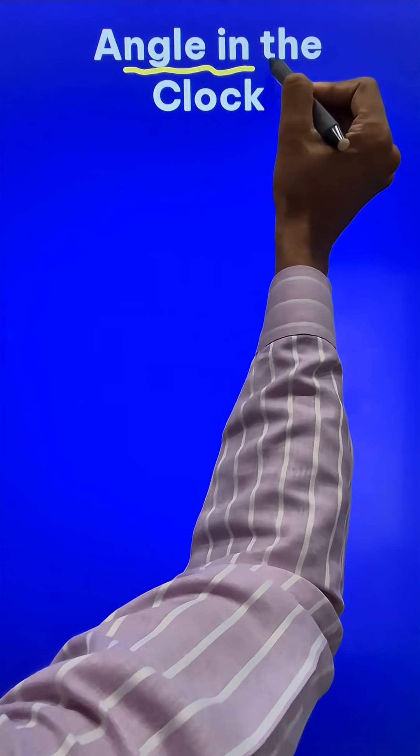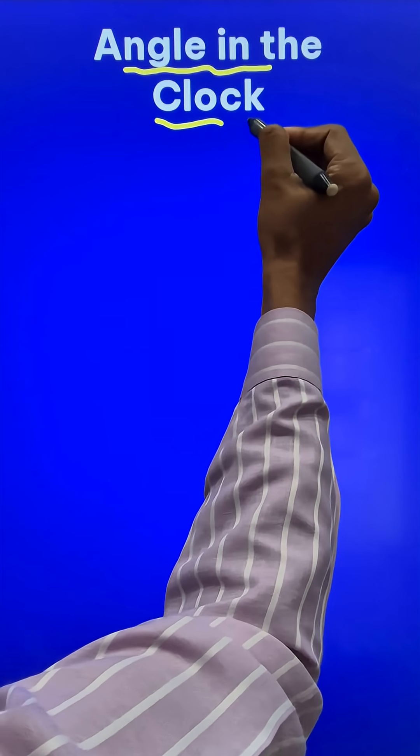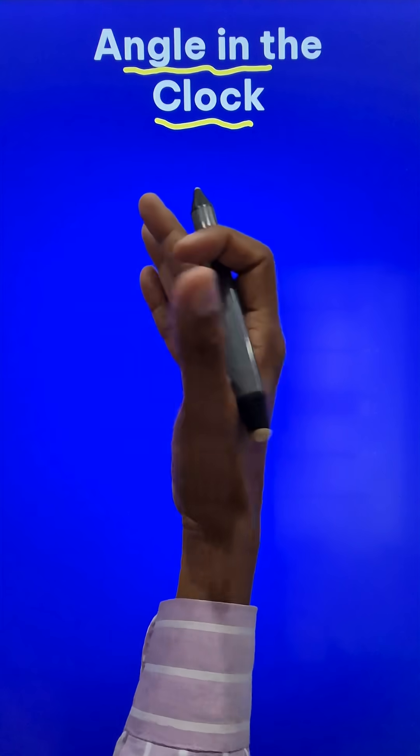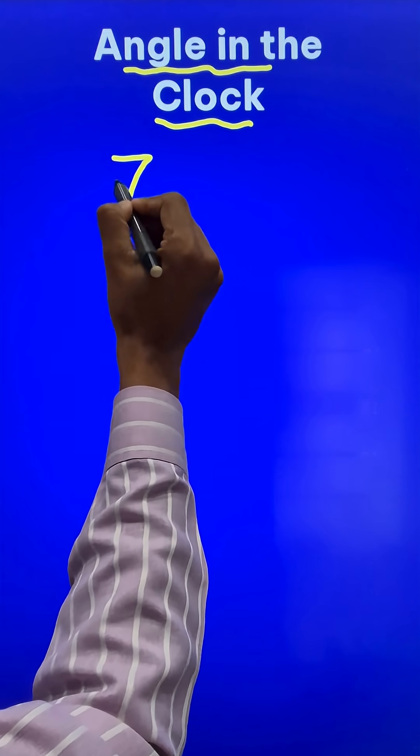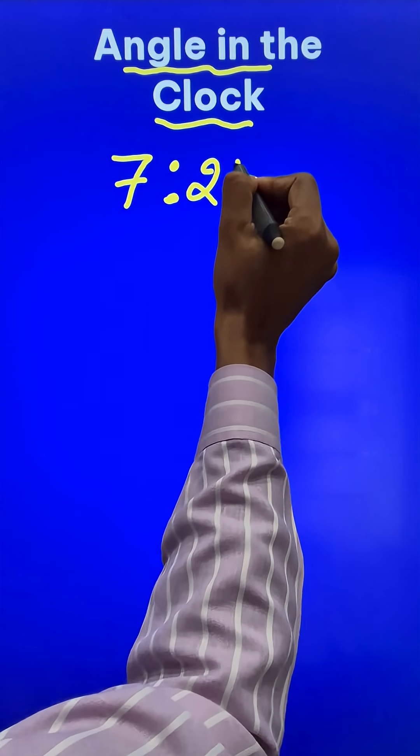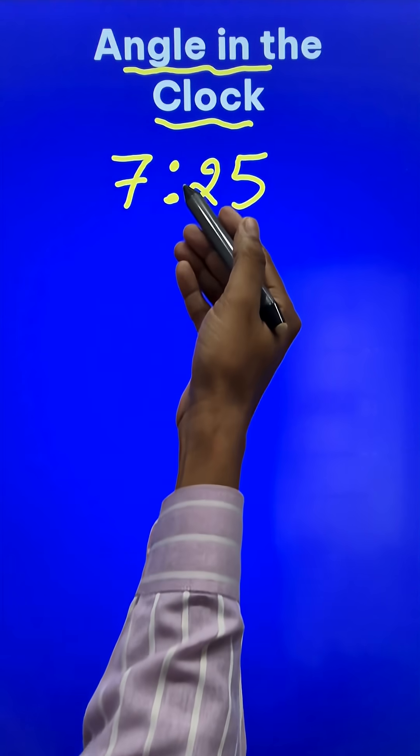This is how you can find the angle made by the hands of a clock easily without much calculation. Suppose the time given to us is 7:25. It can be AM or PM, that doesn't matter - the angle remains the same.